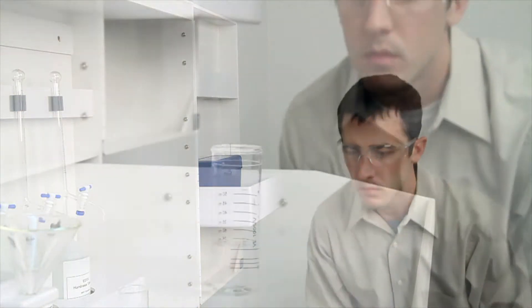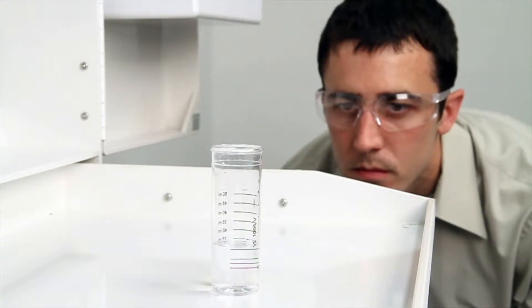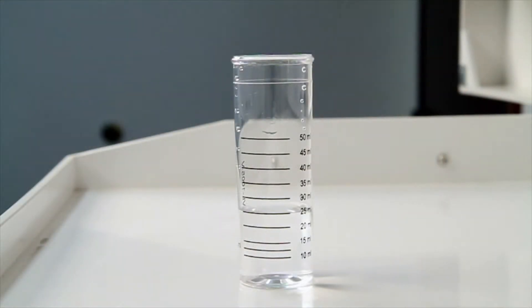When performing a drop count titration, a white background can provide contrast to better see the color changes. A cabinet tray or a white paper towel can provide that contrast.